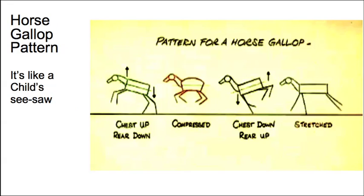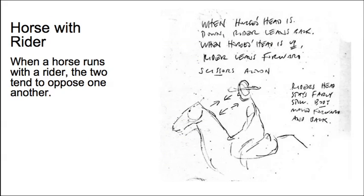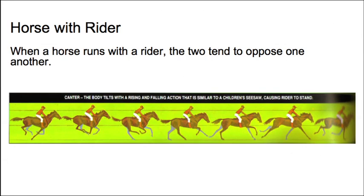As with both the walk and the run, you should check out YouTube reference and go to horselocomotion.com — there's lots of good information there. For future reference, if you're doing a horse with a rider, you'll notice that as the horse's head moves up, the rider's head and body tends to move down. They oppose each other in a kind of scissors action.